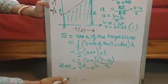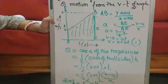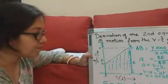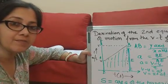So this is the third formula of motion. That is v square minus u square is equal to 2AS. Hope I have made these three equations clear. Thank you.